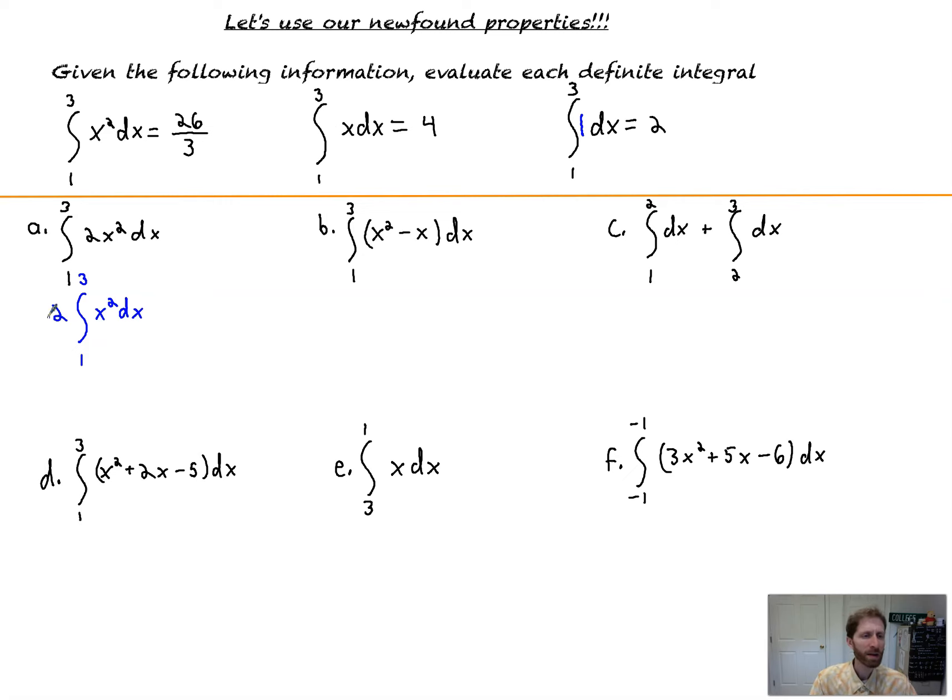So 2 times the integral from 1 to 3 of x squared. Well, that's this, and we know that's 26 thirds. So this would be equal to 2 times 26 over 3, and that simplifies to 52 thirds. That's it. Not so bad.